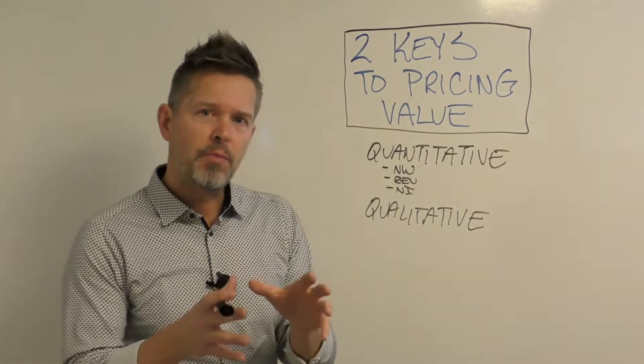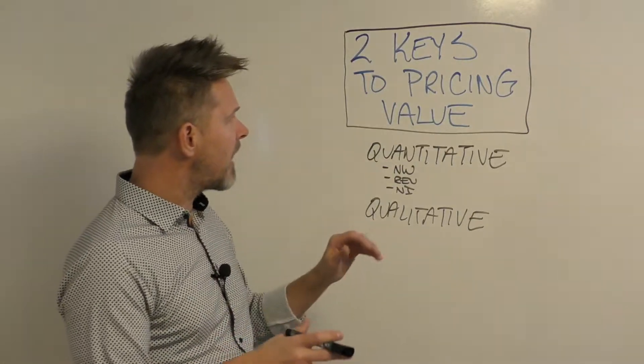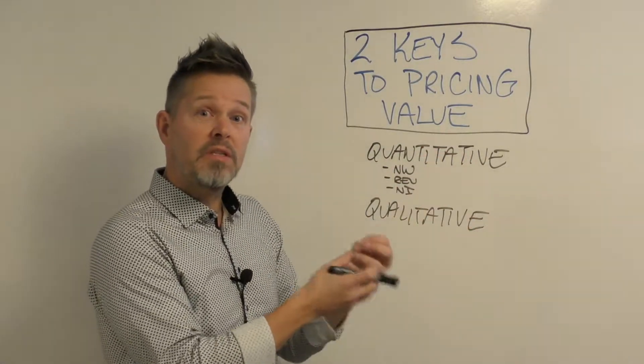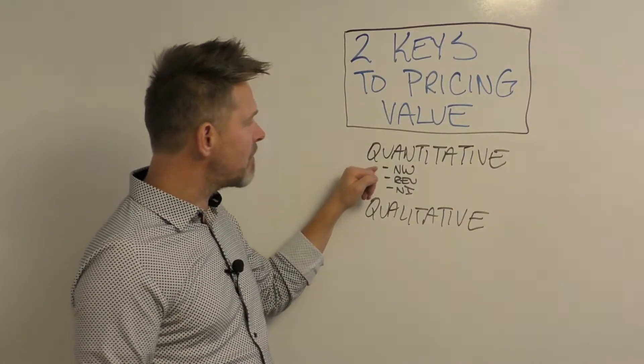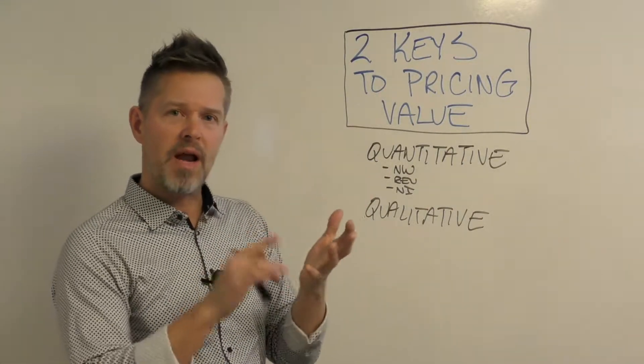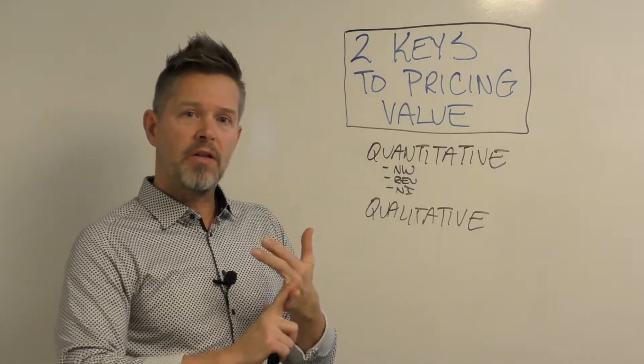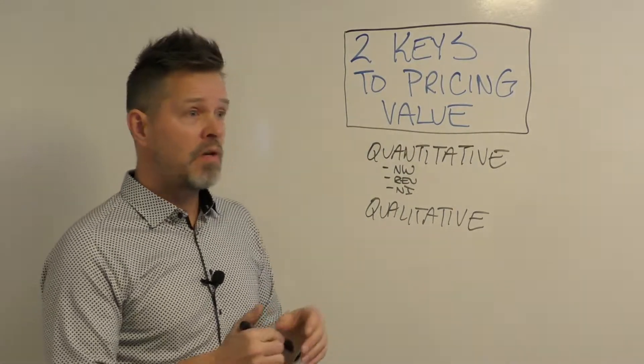So from value pricing, if you're going to price the value, you look at what's the impact to the client, what's the value they're going to receive from it, and these three numbers are good indicators from that, like what's their net worth, what's the revenue model in their business, what's the net income.